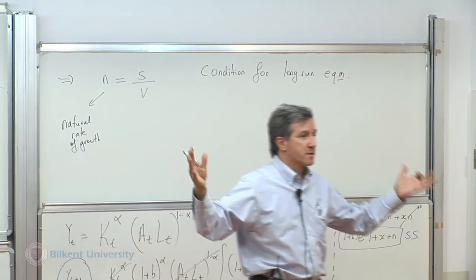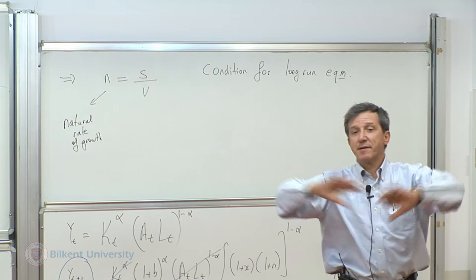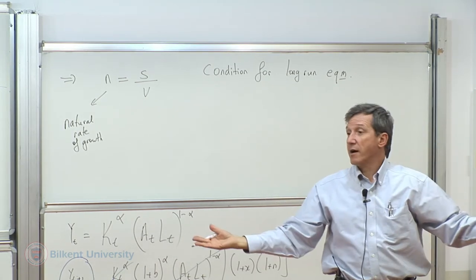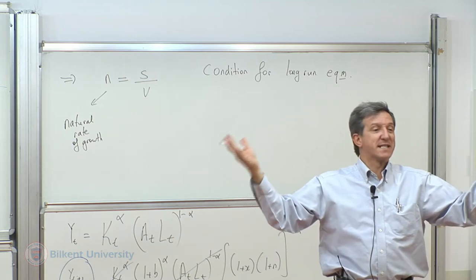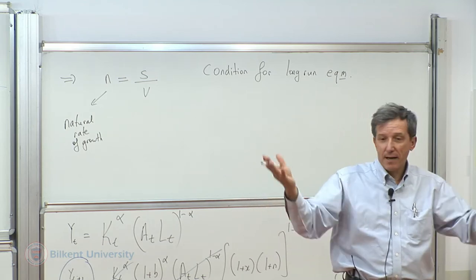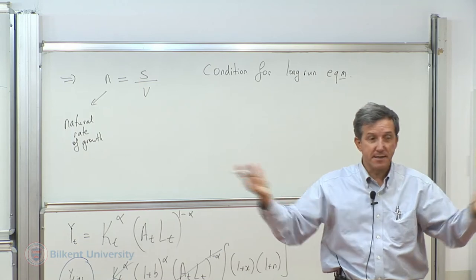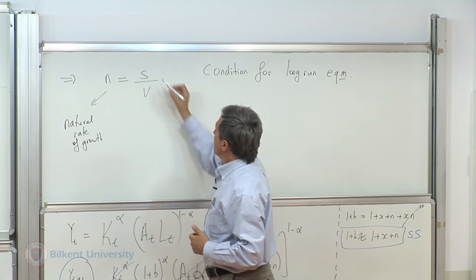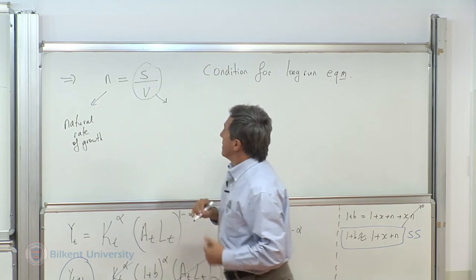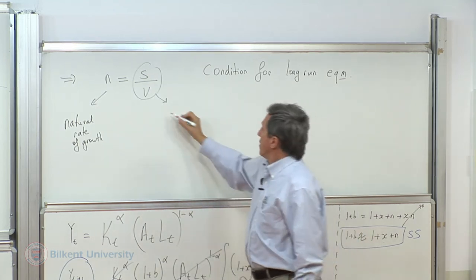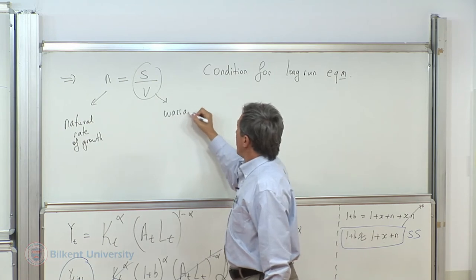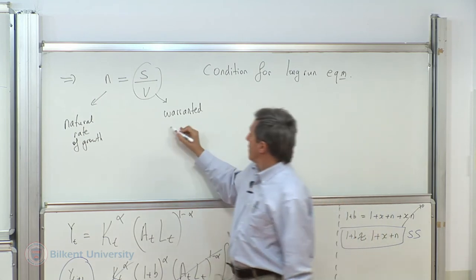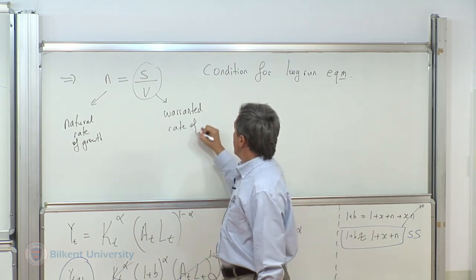It's natural, it happens. Even though everything else is constant, the economy will grow on its natural causes by the rate of population. Simple as it is. The right hand side, both of them, is known as the warranted or required rate of growth.